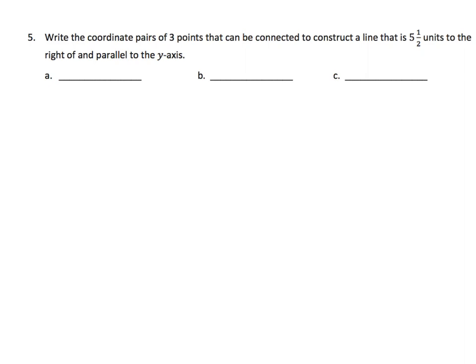Okay, number 5. Write the coordinate pairs for 3 points that can be connected to construct a line that is 5½ units to the right and parallel the Y-axis. Again, I'm going to draw a diagram. It won't hurt you to do the same if you get a little confused by these. So I'm going to have my X and my Y-axis. I want to be parallel to my Y-axis. So I've got to have a straight line like that. And whatever my value for X is, it has to be 5½ right there. Okay?